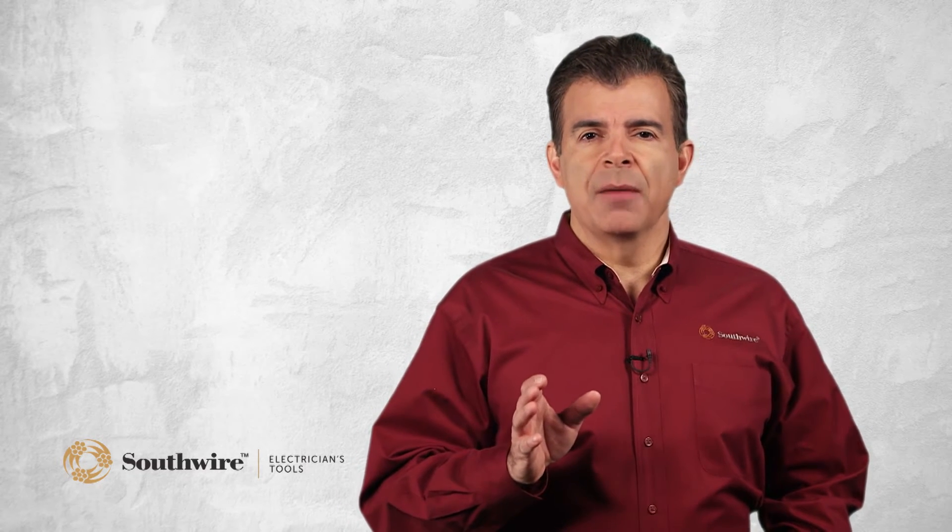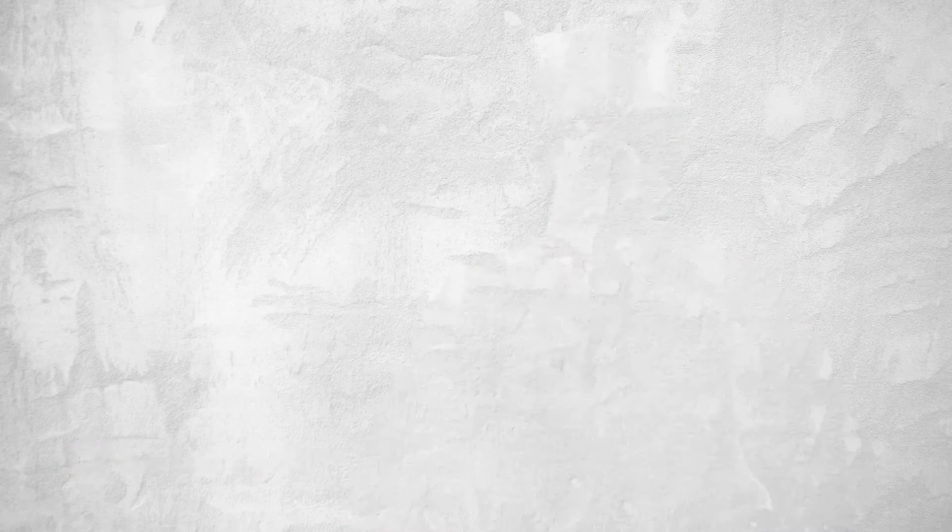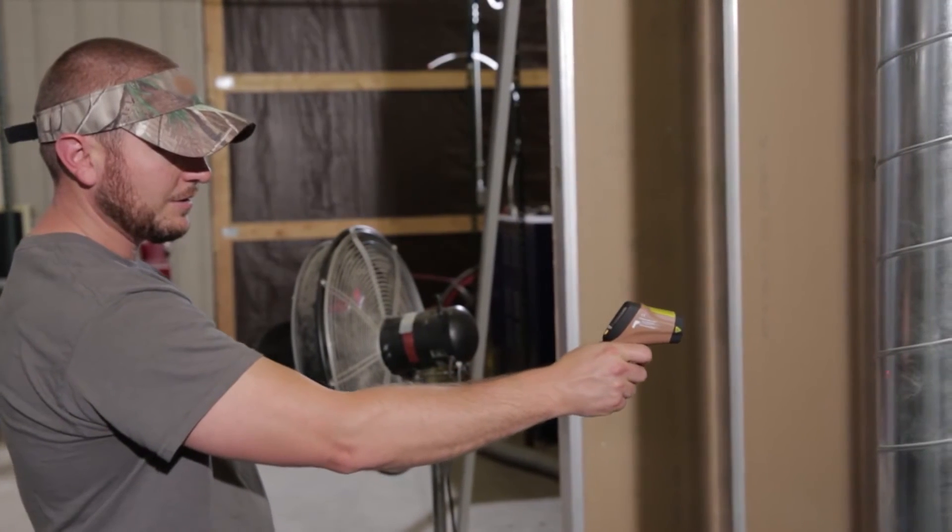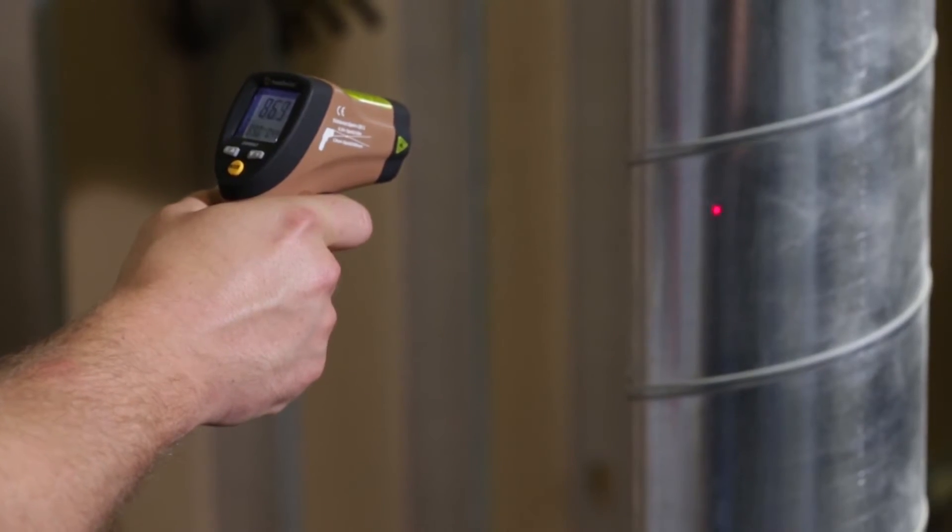Adjustable emissivity compensates for errors when measuring objects that are reflective. This is primarily used when measuring temperature on unpainted metal like conduit.